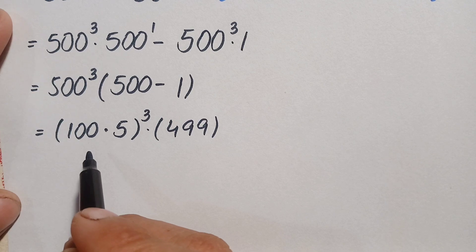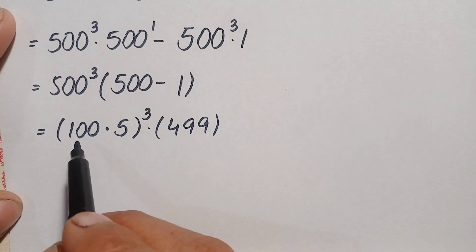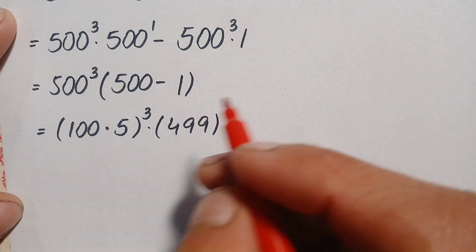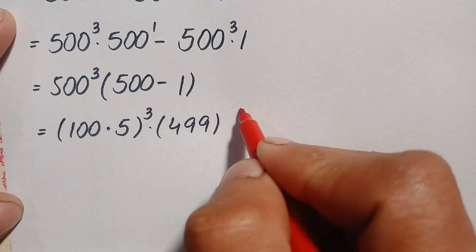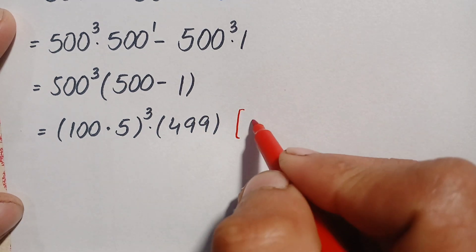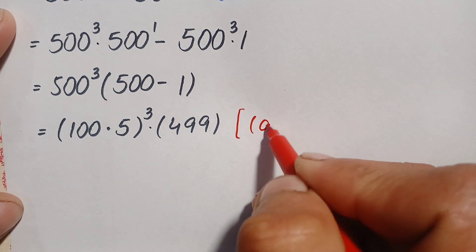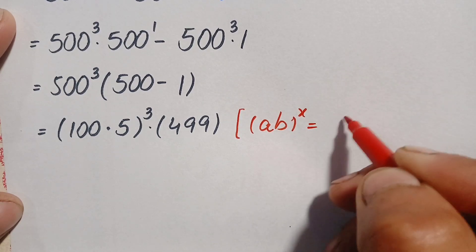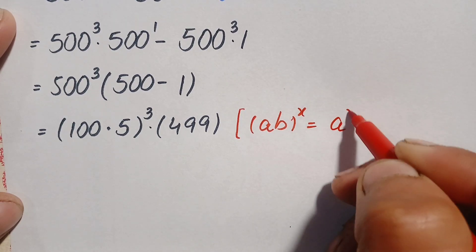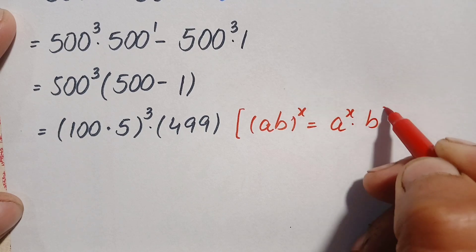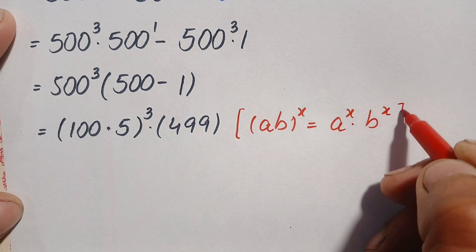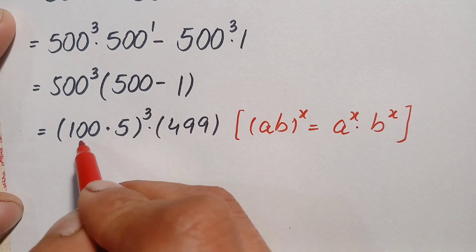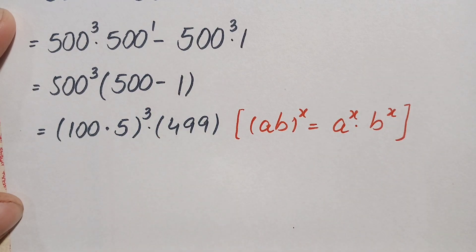Next, we use another exponential identity: (a times b) raised to power m, which can also be written as a raised to power m times b raised to power m. We will apply this identity to split the power over 100 times 5.